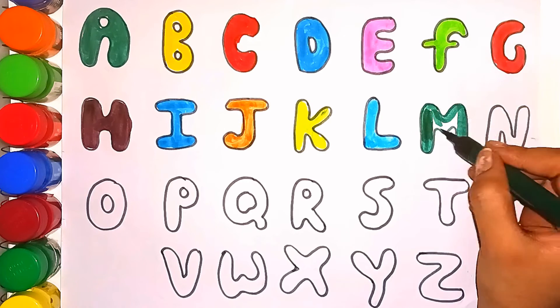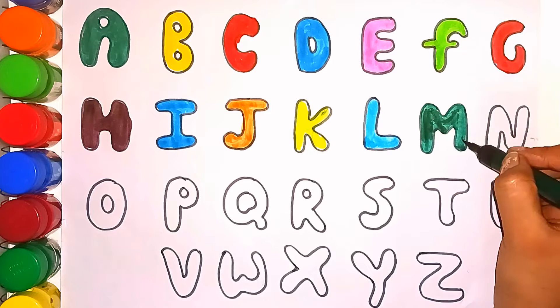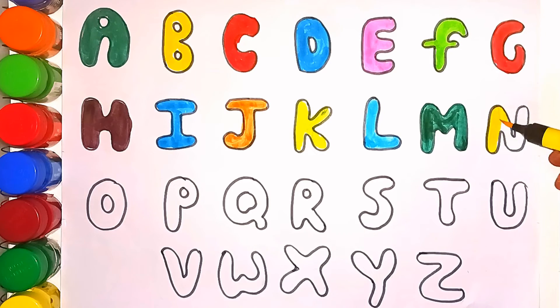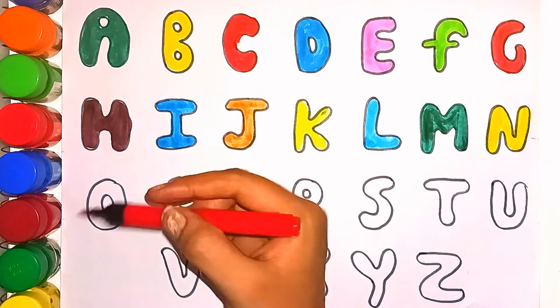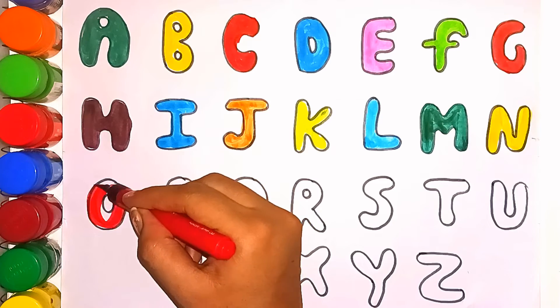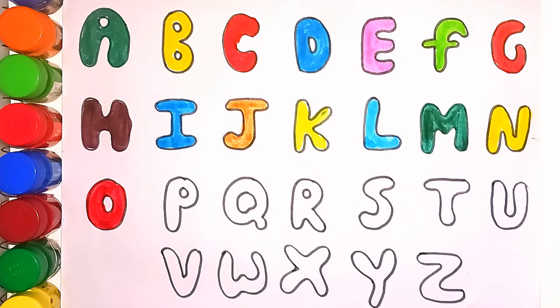Green color M. M for mango. Yellow color N. N for nest. Red color O. O for orange.